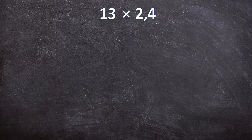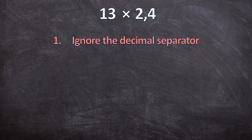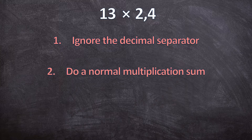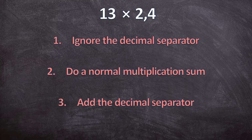Now let's get started. Here we have a whole number times a decimal number. There are three rules you're going to follow. The first rule: you ignore the decimal separator. Then you multiply the two numbers as if they were whole numbers. And for the last step, you add back the decimal separator. I'll show you this step by step until you've reached your answer.